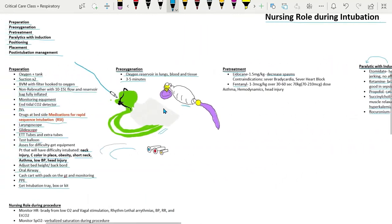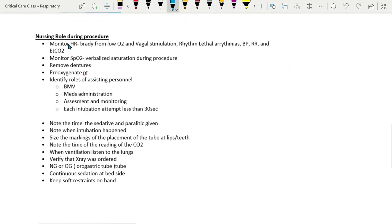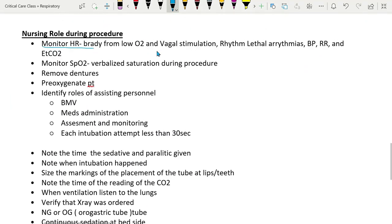Now onto the nursing role during intubation. It is important for the nurse to monitor heart rate, electrocardiogram, rhythm, blood pressure, respiratory rate and end tidal CO2. Heart rate can go brady from decreased O2 and vagal stimulation. Patient could develop a lethal arrhythmia. Blood pressure can drop due to medications. And tidal CO2 would signify effective ventilation.